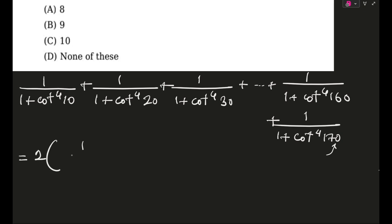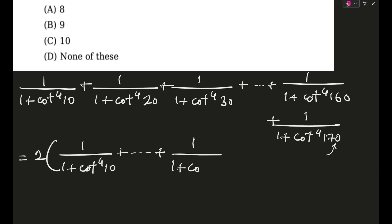Where it goes on is also important — many people will confuse here. There will be a term in the middle which is cot⁴90°, but cot⁴90° will not repeat, it will remain the same. So this will be going up till 1/(1 + cot⁴80°) inside the bracket times 2, and one time only you will have 1/(1 + cot⁴90°).